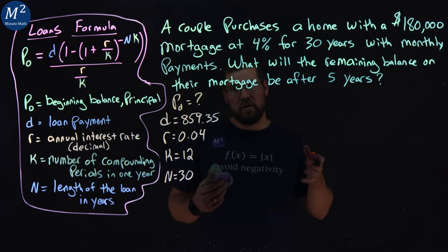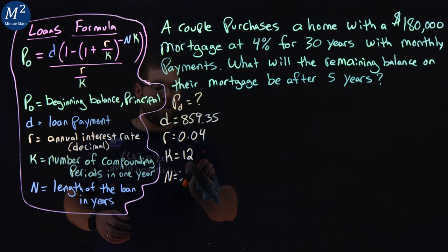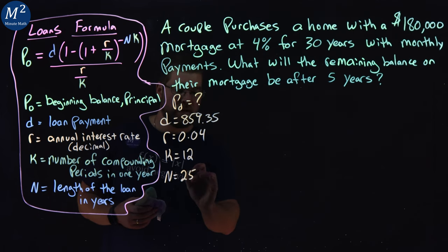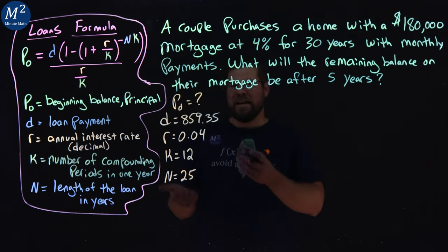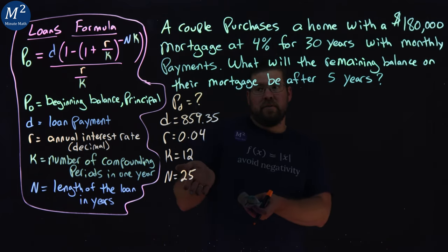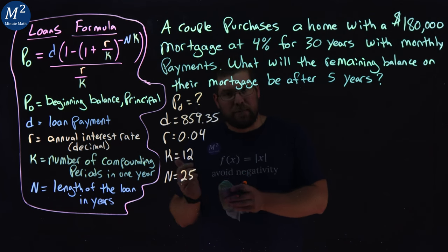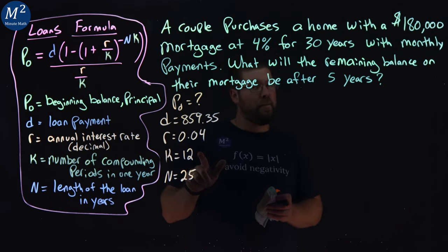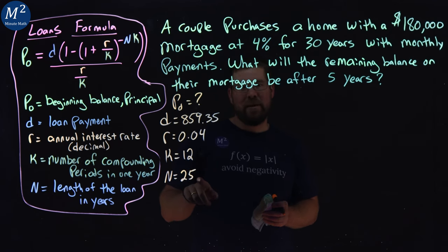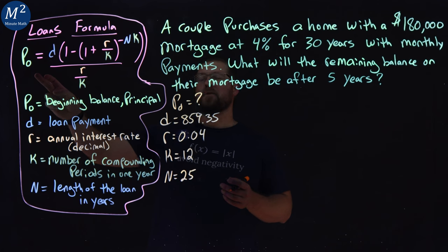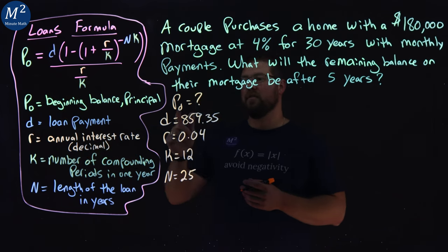Five years into the loan, and that's going to be at time, not 30 years anymore, but five years later. So we have now 25 years left on the mortgage. So essentially we're kind of solving it like it's a problem right now that we have a loan for 25 years and we have to figure out what the mortgage amount is at that time. So we know the monthly payment, the interest rate, the compounding periods, and how many years is left on the loan. So now we go back into our formula and plug in those values to solve P sub 0.